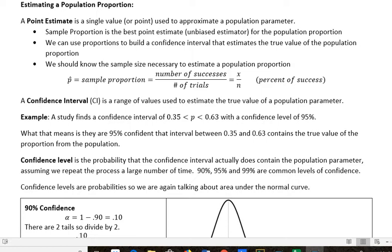But I need to get the definitions out there for now. A point estimate is a single value or point used to approximate a population parameter. I say population parameter because we could be talking about proportion, mean, or standard deviation. In this particular section, we're talking about proportion.